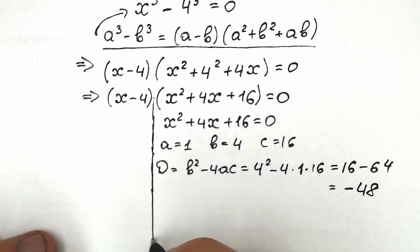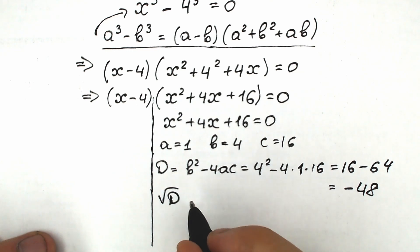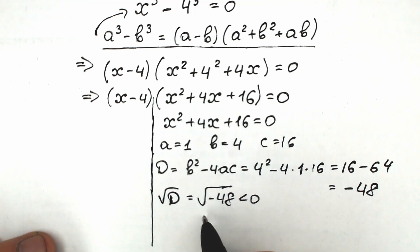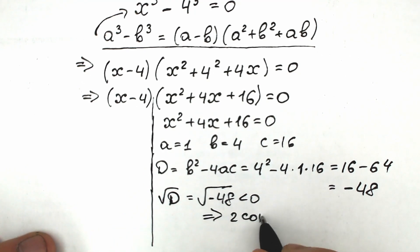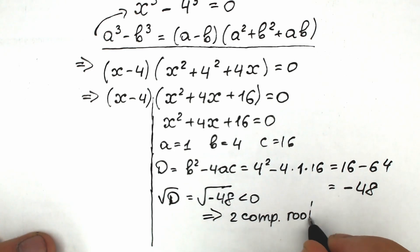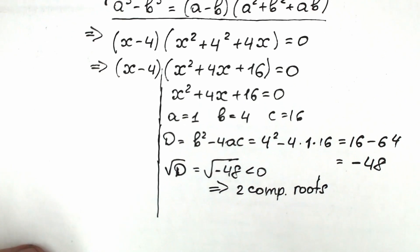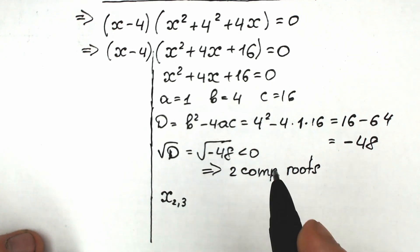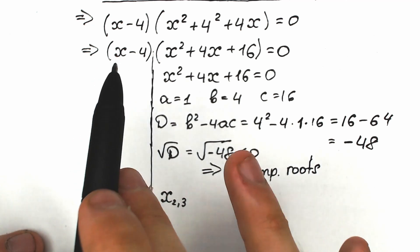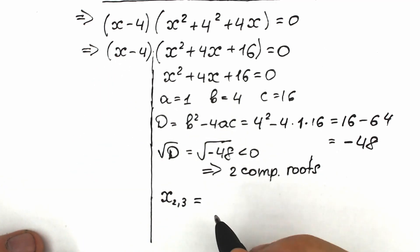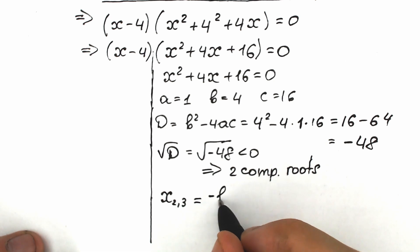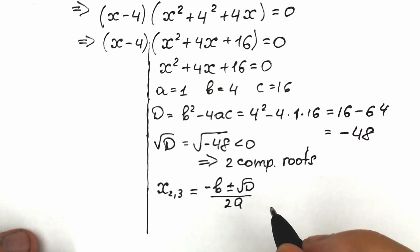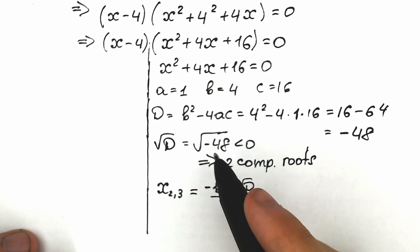A negative discriminant means the square root of the discriminant equals the square root of negative 48, which is imaginary. This implies we have two complex roots here. Let's find them using the quadratic formula: x equals negative b plus or minus square root of the discriminant, all over 2a. We have everything — discriminant, a, b, and c.